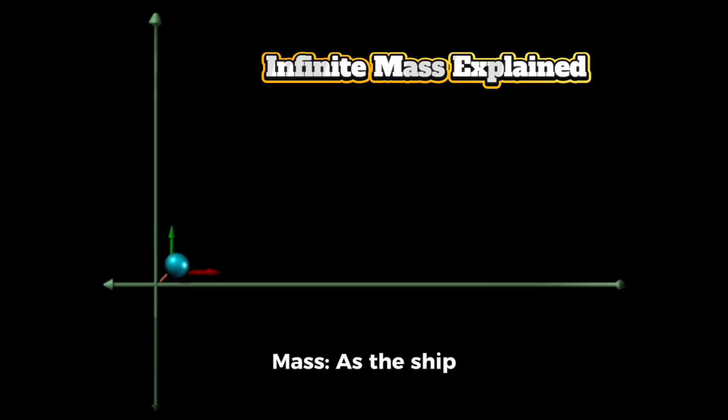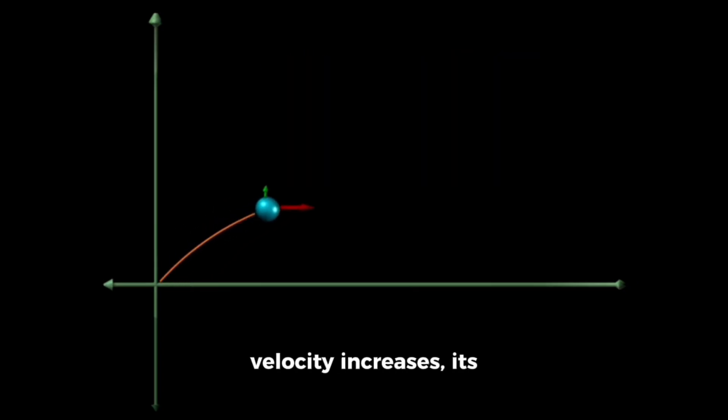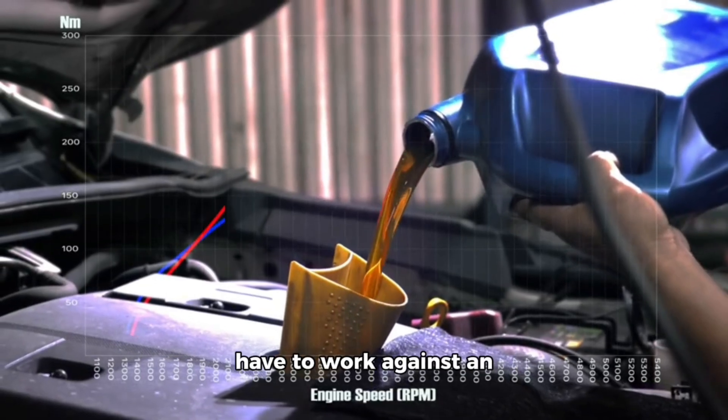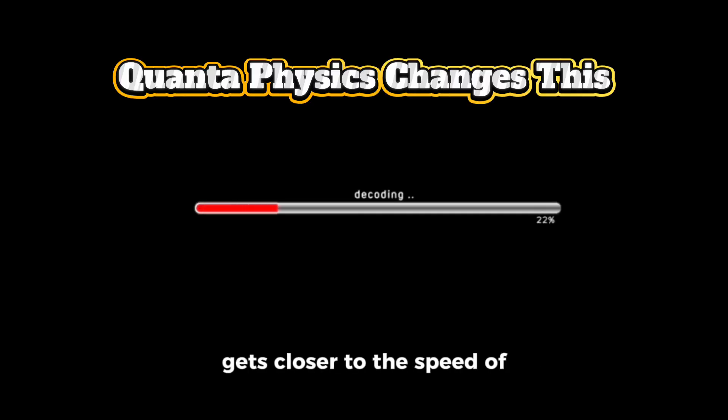Here's why increasing mass as the ship accelerates. In its velocity increases, its relativistic mass also increases. This means that the engines have to work against an ever-increasing inertia, diminishing returns as the ship gets closer to the speed of light.